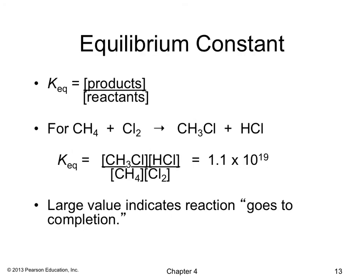The equilibrium constant, KEQ, equals the concentration of products divided by the concentration of reactants. For the free radical chlorination reaction, KEQ equals the concentration of chloromethane times hydrogen chloride divided by methane times chlorine. The value of KEQ is 1.1 × 10^19. This large value means the reaction goes to completion.